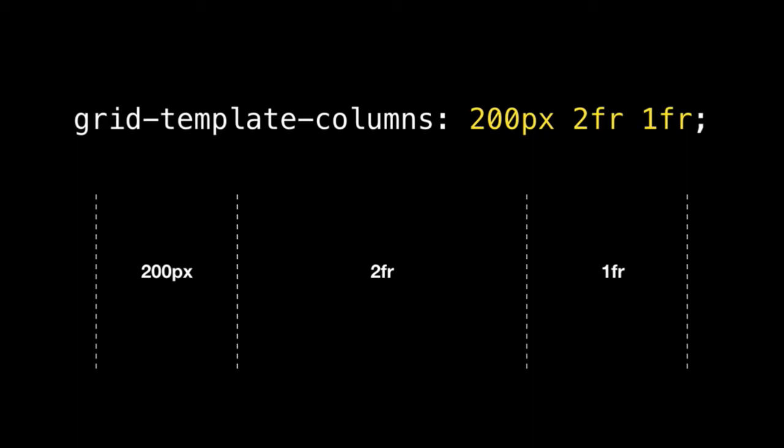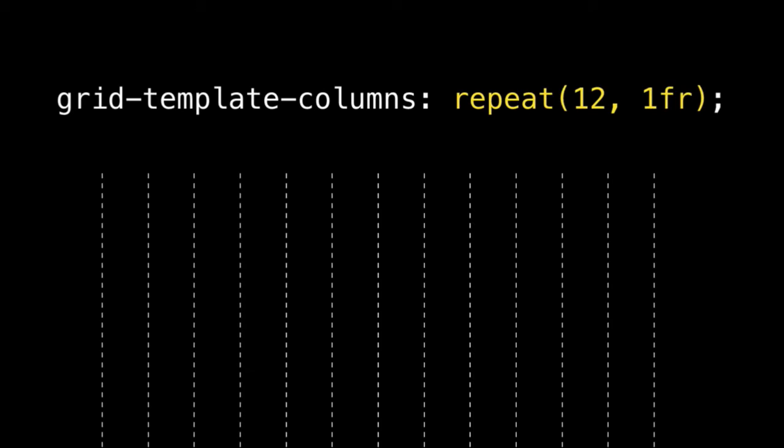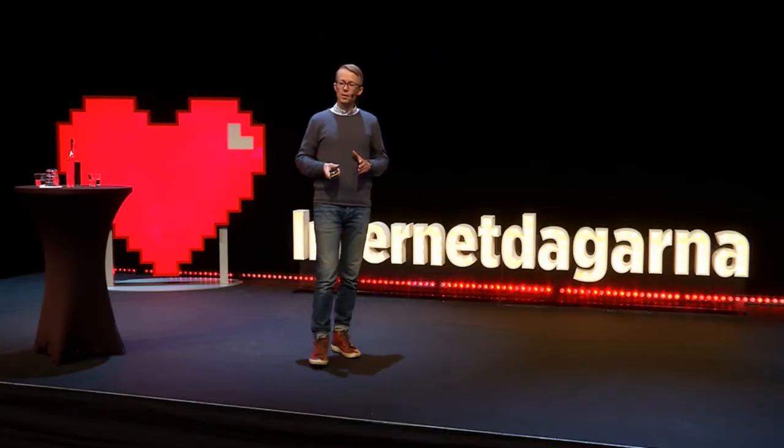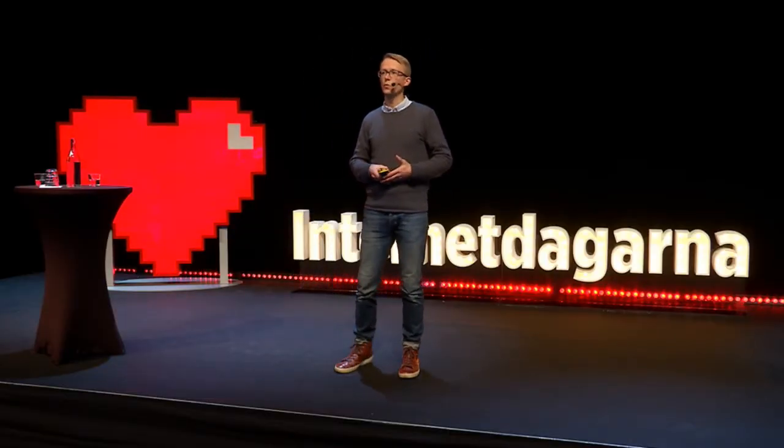For a 12-column grid, I could say grid-template-columns: 1FR, 1FR, 1FR and so on, but there's a handy repeat notation: repeat(12, 1FR). You can also repeat a pattern of columns — for example, repeat(12, 1FR 50px) gives alternating flexible and fixed-width columns. And there's a counterpart grid-template-rows which works exactly the same.